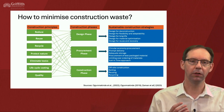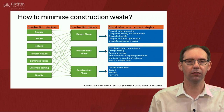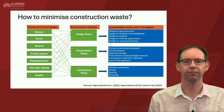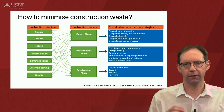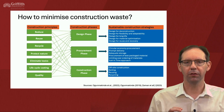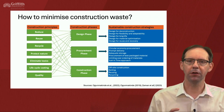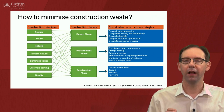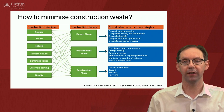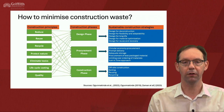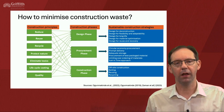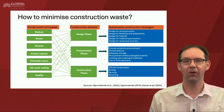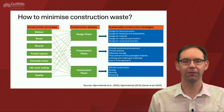All seven construction principles — reduce, reuse, recycle, protect nature, eliminate toxics, lifecycle costing, and quality — feed into the design phase. In this session we look at sustainable construction strategies, particularly the first three: design for deconstruction, design for flexibility and adaptability, and design for long life, plus a few others including material optimization and reuse recovery. This diagram has been generated from various sources listed below and on the final references slide.